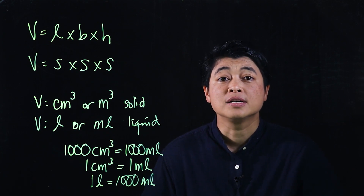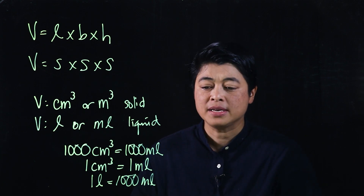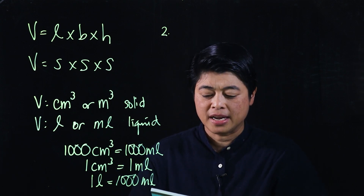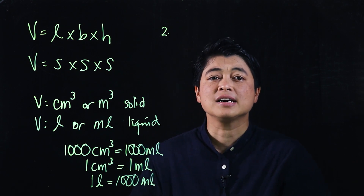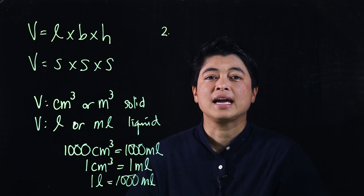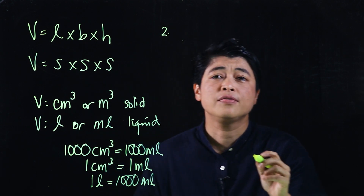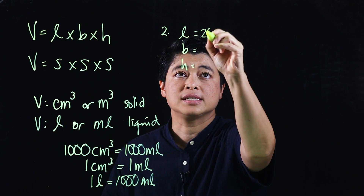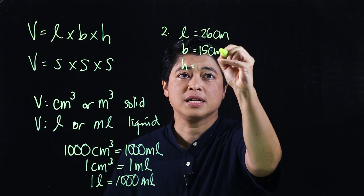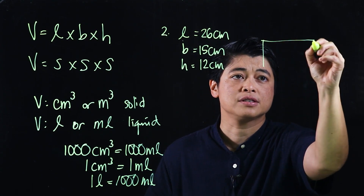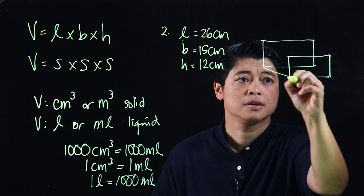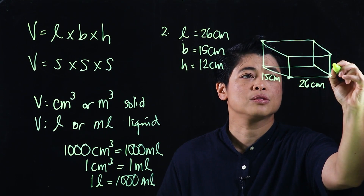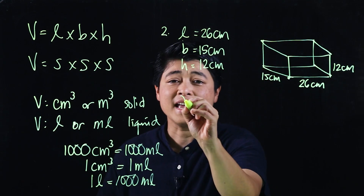Starting with page 166: a rectangular tank measures 26 cm by 15 cm by 12 cm. The problem has a figure of a solid — if it doesn't, I highly suggest drawing one, or writing down length, breadth, and height. So we have 26 cm, 15 cm, and 12 cm.